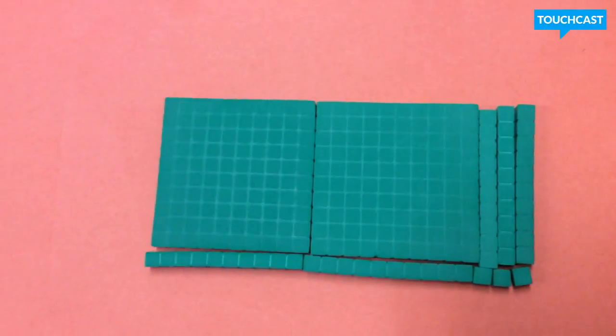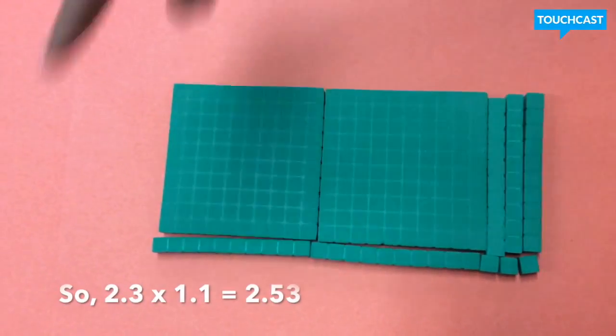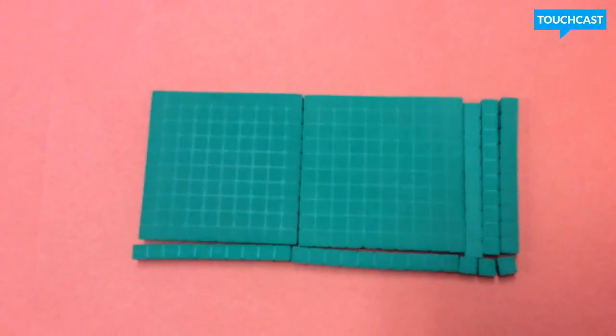Now that we counted all of the base-10 blocks, our answer is two and fifty-three hundredths.